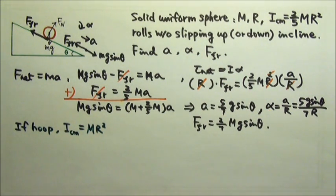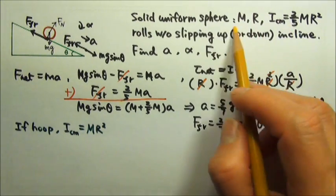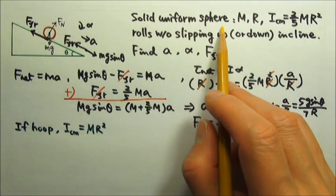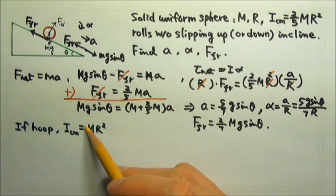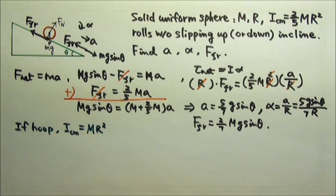So if an object is rolling without slipping up or down the incline, the acceleration has to do with, of course, the angle of the incline and the shape, the kind of mass distribution we have for the object, because it has to do with this number here. If it's a different shape or different kinds of mass distribution, it will have a different number here.